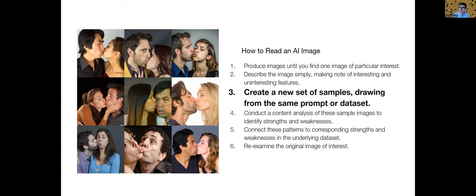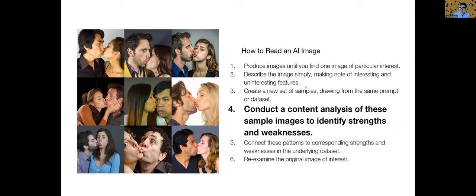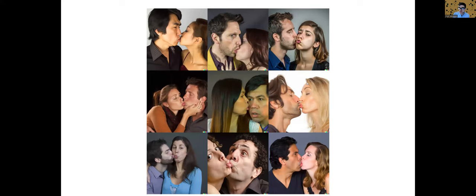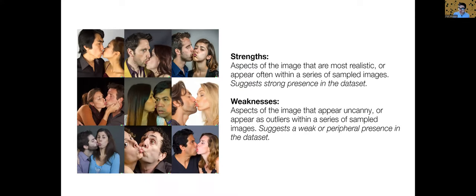And we can go to step four, conduct a content analysis of these sample images and identify strengths and weaknesses. Now, there's some confusion about what strengths and weaknesses might mean, so I want to clarify this. Strengths are aspects of the image that are most realistic or appear most often within a series of the sampled images. That suggests a strong presence in the data set. Weaknesses are aspects of the image that appear uncanny or appear as outliers within a series of sampled images. It suggests a weak or peripheral presence in the data set.